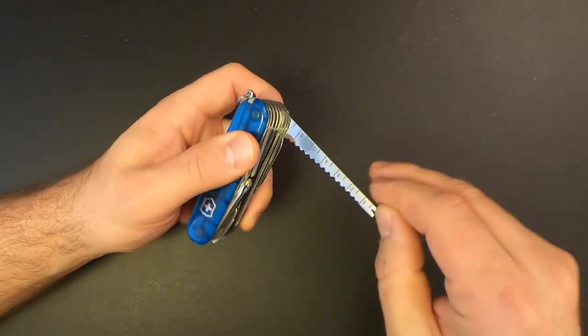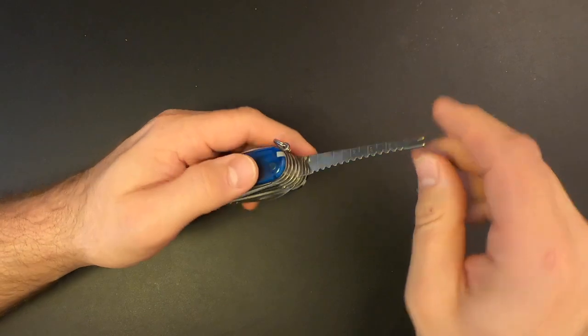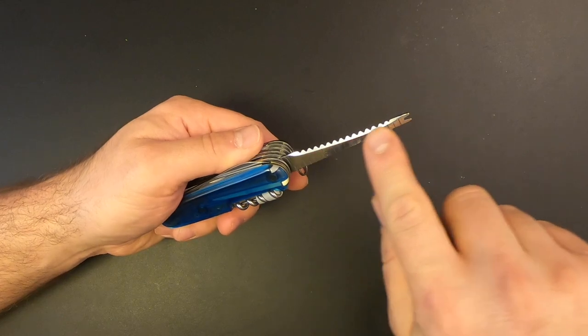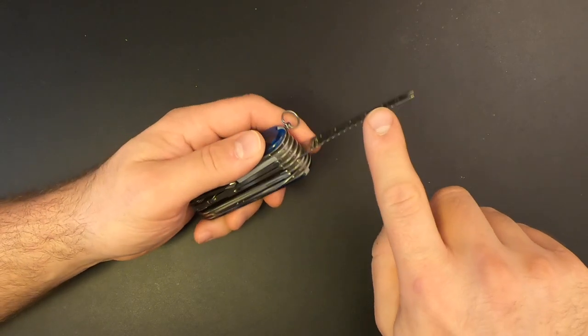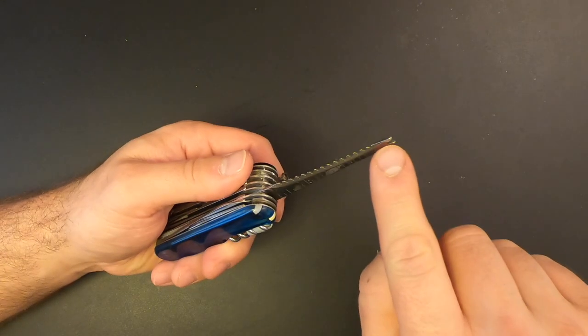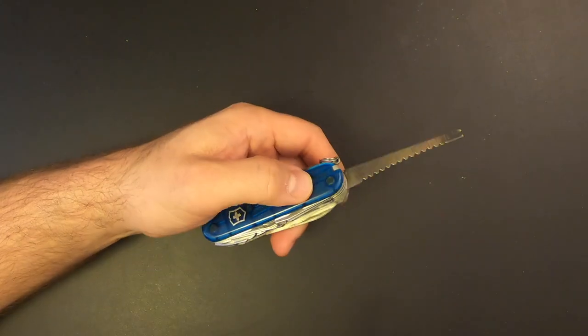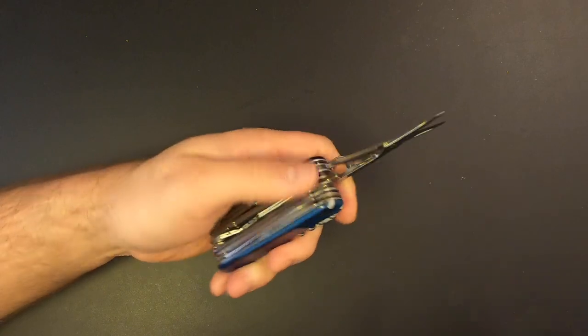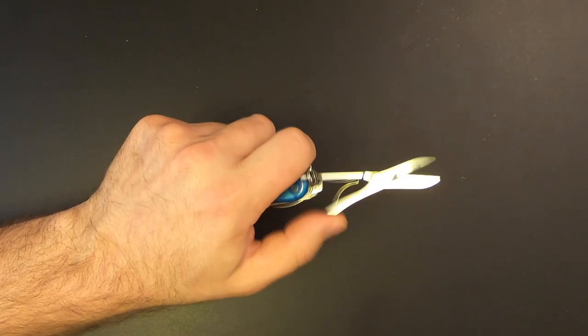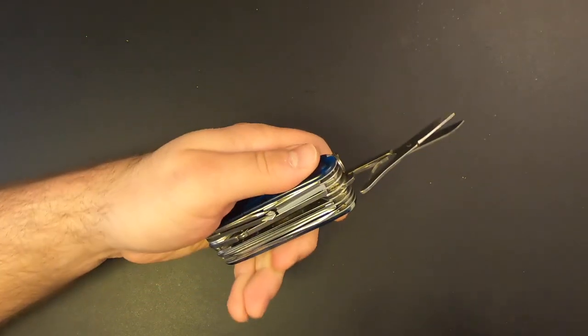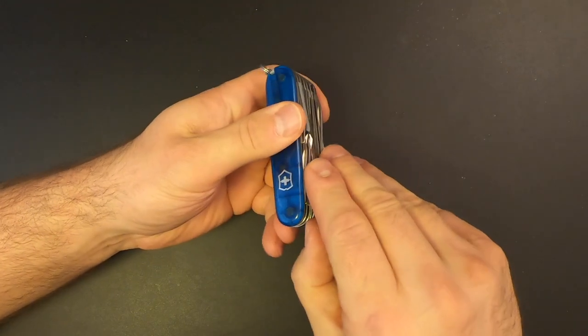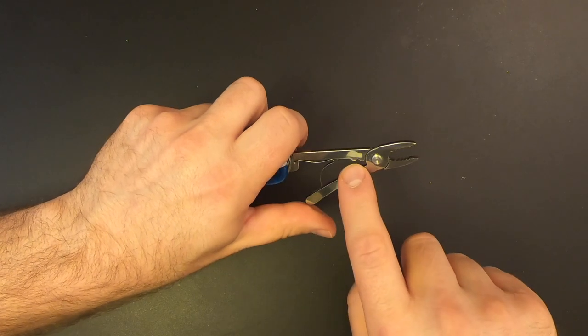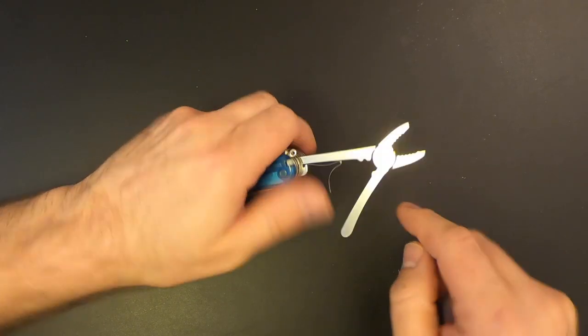Then we've got a multi-tool here. It's got a metric ruler on one side with centimeters. Then we've got inches on the other side. This is a fish scaler. And then right here is a fish hook remover. Next to that, we've got those great Victorinox scissors. And these are the larger scissors that they put on their larger knives. Excellent. And then we've got the pliers. A little pair of pliers. And it's also got a crimping tool and a wire cutting tool as well.